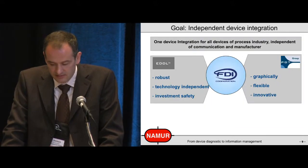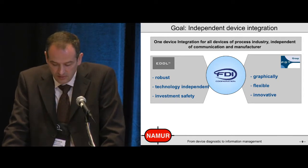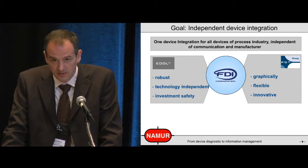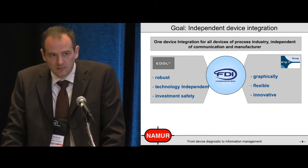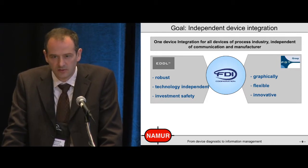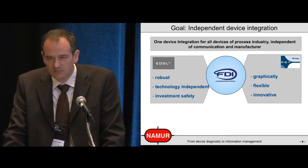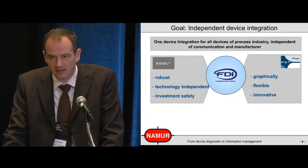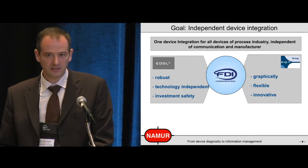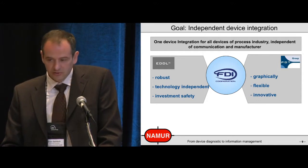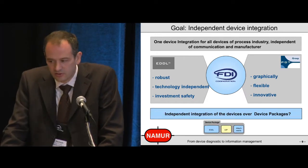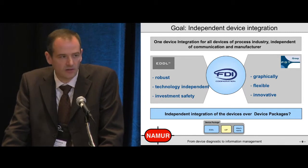The goal must be an independent device integration so that you have just one device integration for all devices used in the process industry, independent from the communication and the manufacturer. And that's the point where FDI — field device integration — comes up. On one hand you have the EDDL side, which is very robust, independent from operating systems and therefore investment safe. And on the other hand you have the FDT side, which is graphical, very flexible and innovative. So we should combine these good points of both technologies and reach an independent integration of devices over device packages.